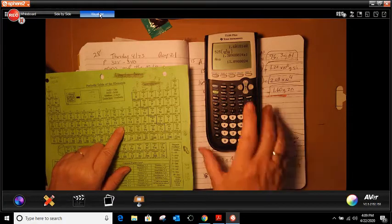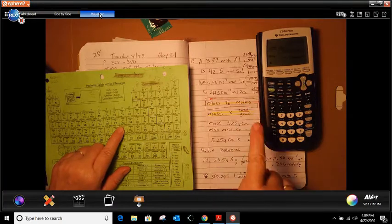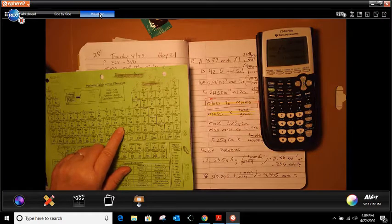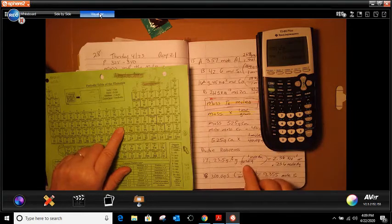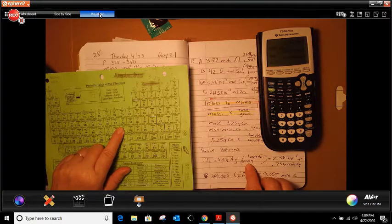I'm going to put my one mole up on top. Remember, one mole up on top. And then my AMU on the bottom, which is 107.87.